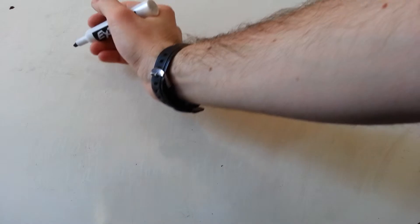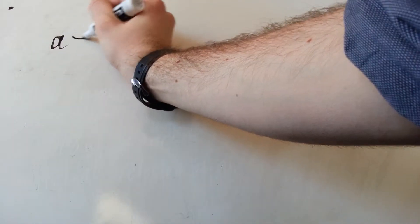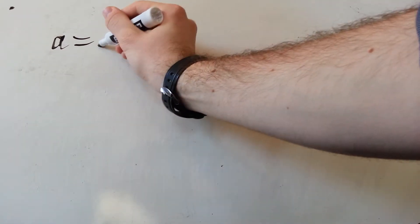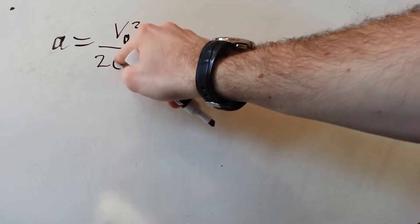So, we know the initial velocity and we know the distance we need it to stop in, so we can find the acceleration. Because a is equal to v0 squared over 2 delta x.